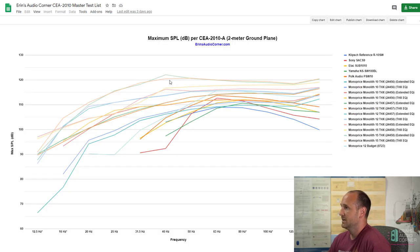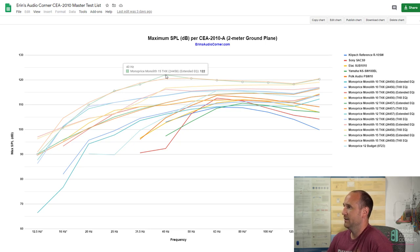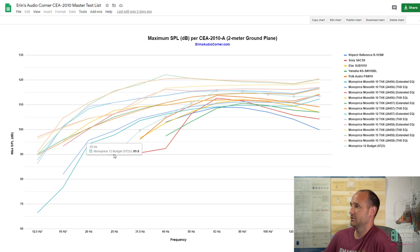If you want to go to my SPL tabs, you can see the levels. The Monolith 15 at 40 Hertz gets 122 DB. That's pretty dang loud. At 25 Hertz, 115 DB. That's pretty dang loud. And then if you go and compare it to something like my budget Monoprice 12 inch, 25 Hertz, 90 DB, the Monolith 12 is 110 DB versus 90 DB. So that's 20 DB in extra output that you can get in terms of max output capability. Obviously you're getting your money's worth when you're talking about spending extra money on a Monolith subwoofer.